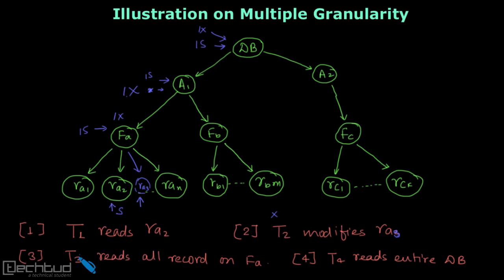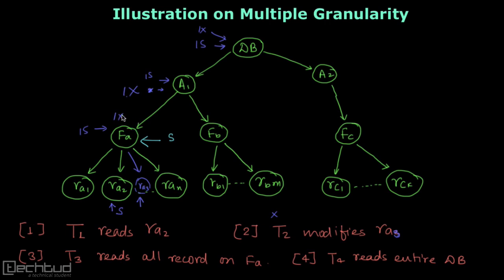The third operation is done by transaction T3: it wants to read all records on FA. In order to read, we need to obtain a shared lock here. We need to understand whether shared lock is compatible with intention shared or intention exclusive. As we know, shared lock is not compatible with intention exclusive. Referring to the compatibility matrix, this shared lock is not compatible with the intention exclusive lock already obtained by transaction T2 in order to write RA3. So this shared lock cannot be granted, and this transaction will not execute.